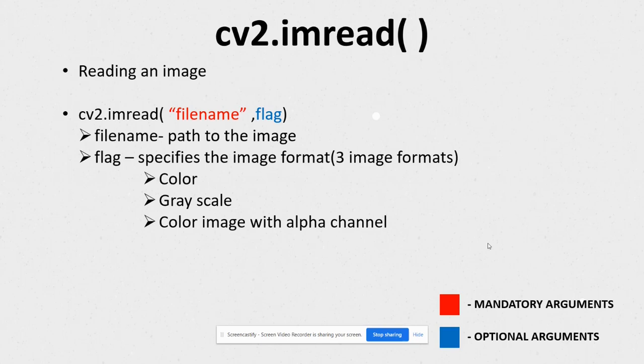cv2.imread reads an image in 8-bit format, meaning each intensity value is represented with 8 bits, so the range of intensities varies from 0 to 2^8 minus 1, that is 0 to 255.